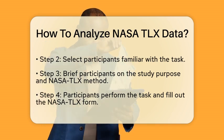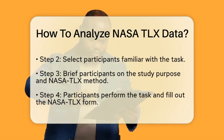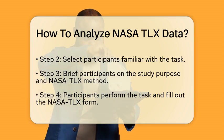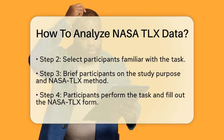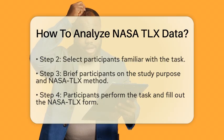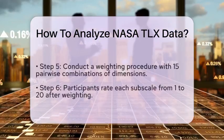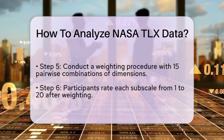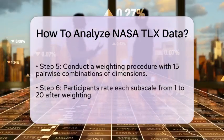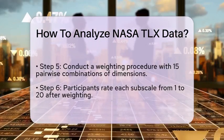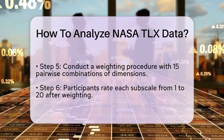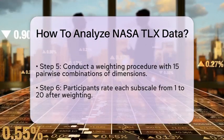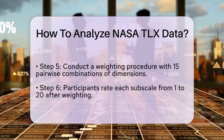Step 5: Weighting procedure. The next step involves a weighting procedure. You will present the participants with 15 pairwise combinations of the six dimensions and ask them to select which dimension from each pair contributed the most to the workload. This helps in creating an individual weighting of the subscales.